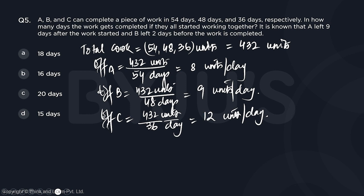Now, as per the question, these 432 units, they all work together for 9 days and B left 2 days before the work gets completed. That means for the last 2 days only C was working alone.